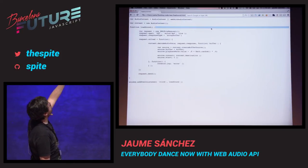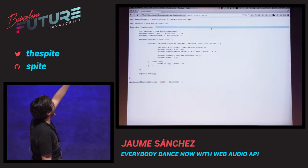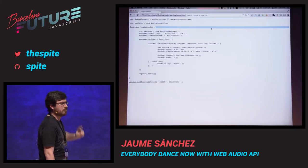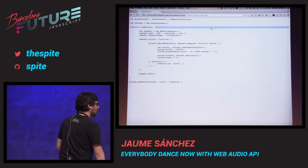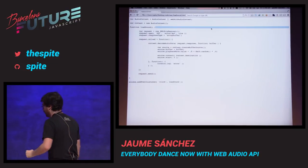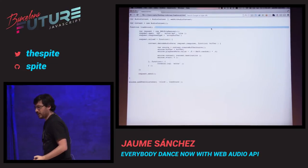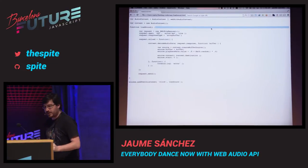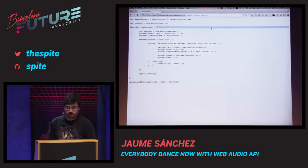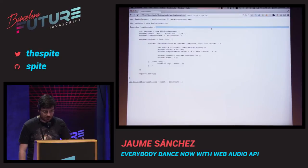Note that it's got playbackRate.value. That's weird — why is that? Because usually you just assign a value directly. It's because it's an AudioParam, and we'll talk about that later.